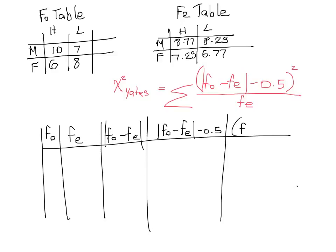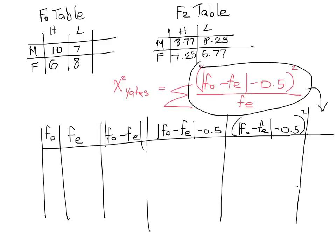So fo minus fe minus 0.5, we can then square the result of that. I'm running out of space here, but our final step is to do that whole thing. I'll just put a little arrow there so we know that's what we're going to do in the last column.